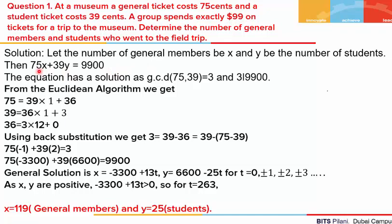First of all, we will check whether such an equation has a solution or not. The GCD of 75 and 39 is 3, and we see that 3 divides the right hand side, which is 9900. So the solution exists.